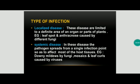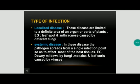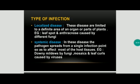First we see about type of infection. In that we have two types: localized disease and systemic disease. Localized disease means the disease which is limited to a definite area of an organ or a certain part of a plant — example leaf spot and anthracnose. In systemic disease, the disease spreads from a single point of a plant and spreads to other parts; the whole plant is affected and the economic part is also affected, so the yield is drastically reduced.